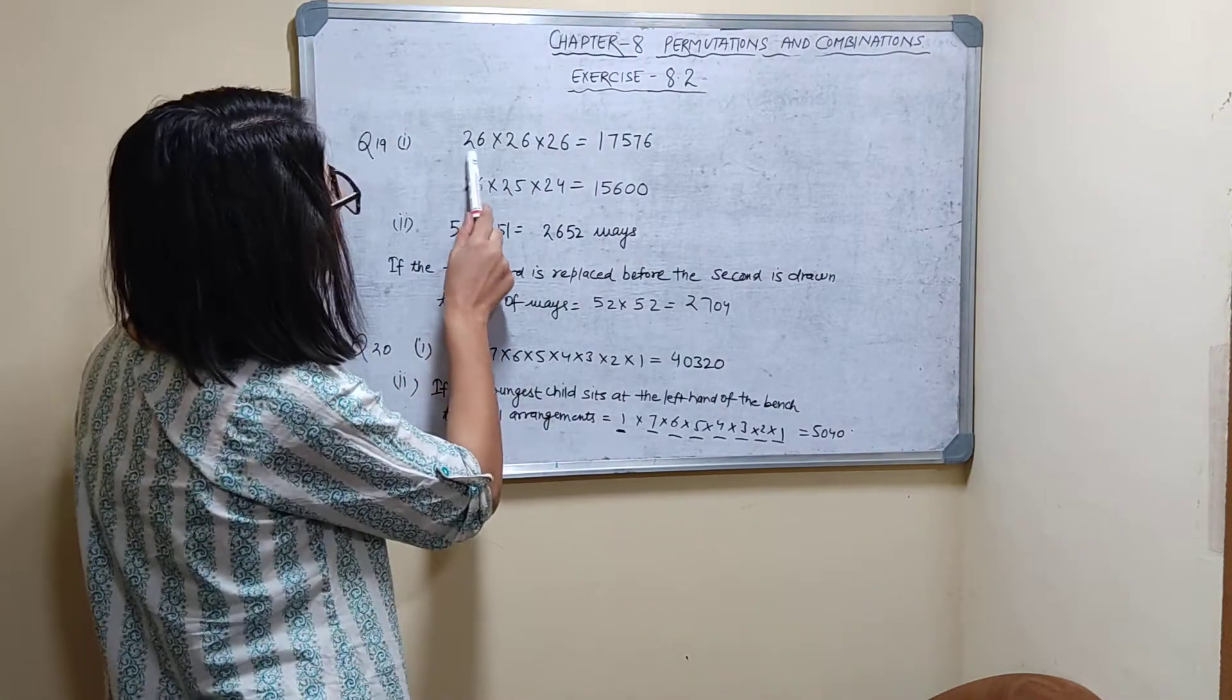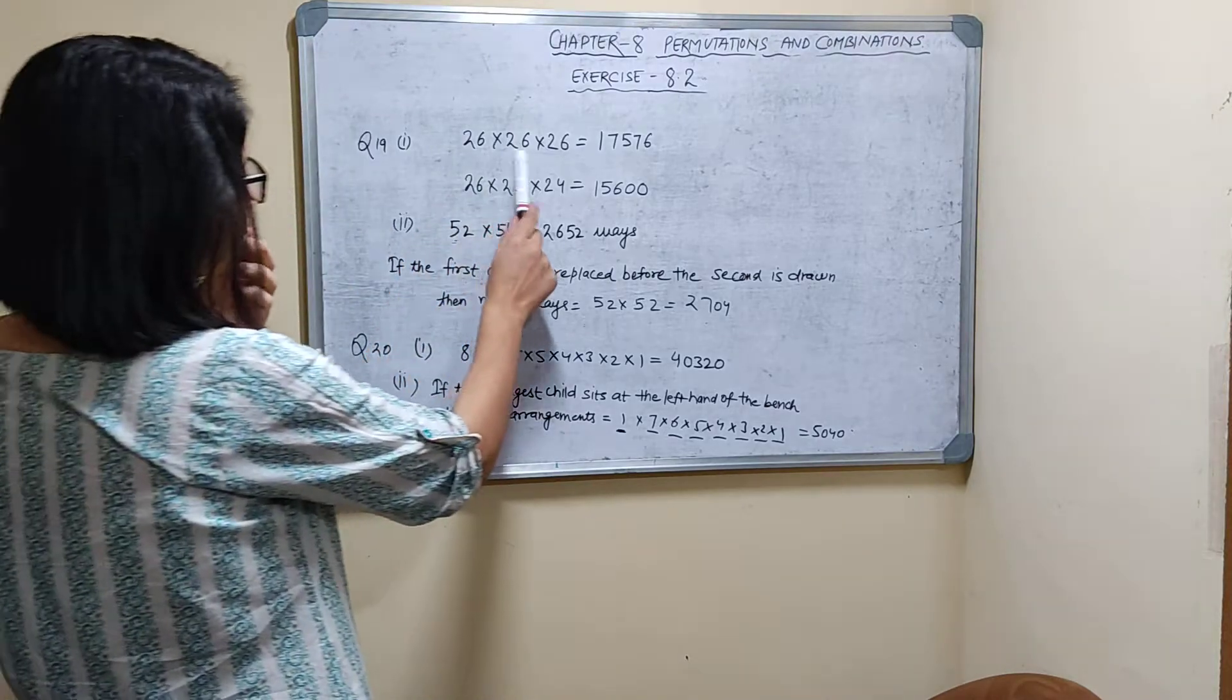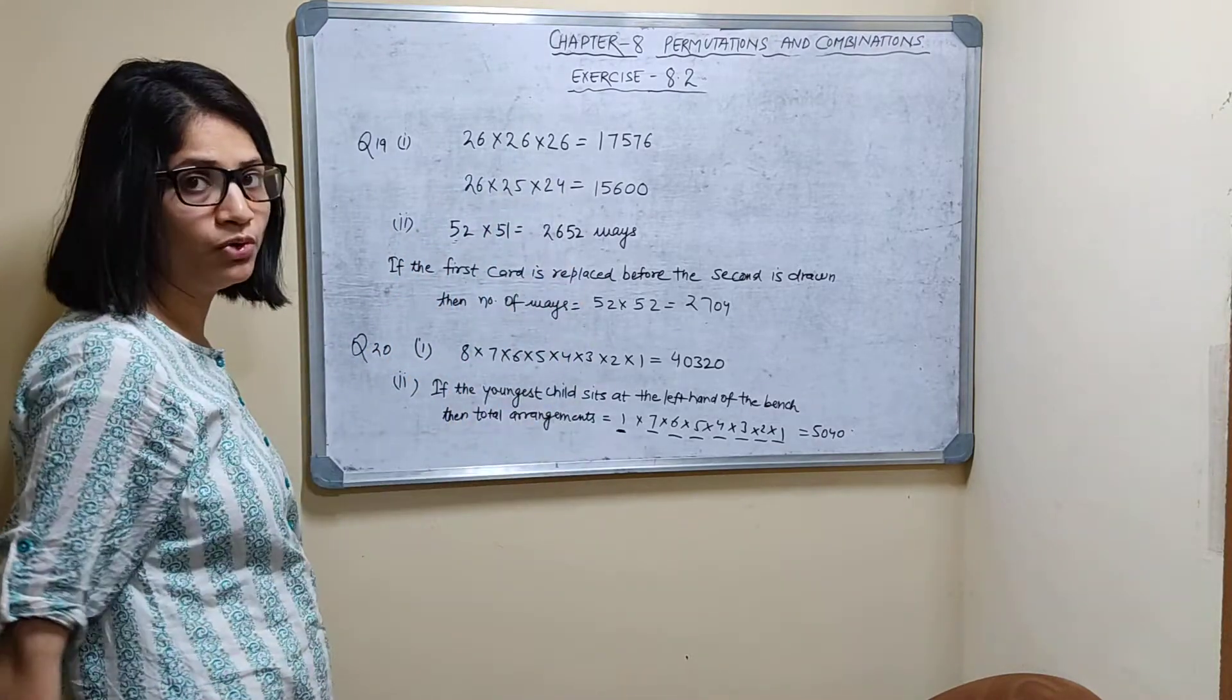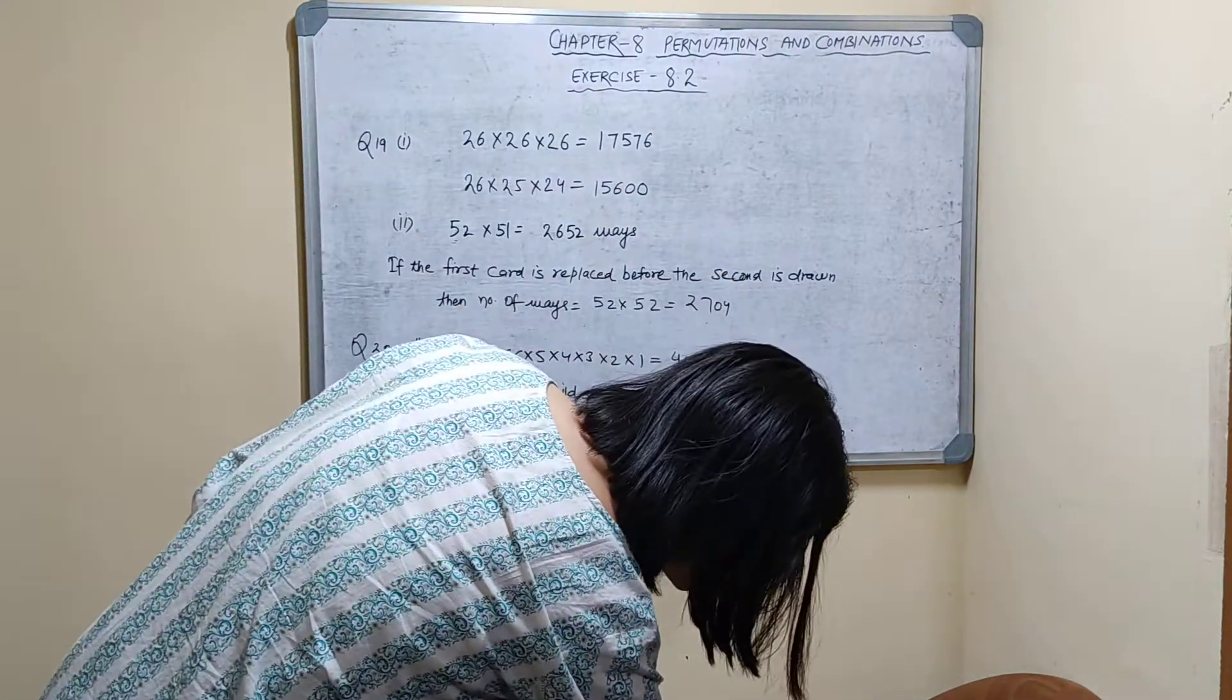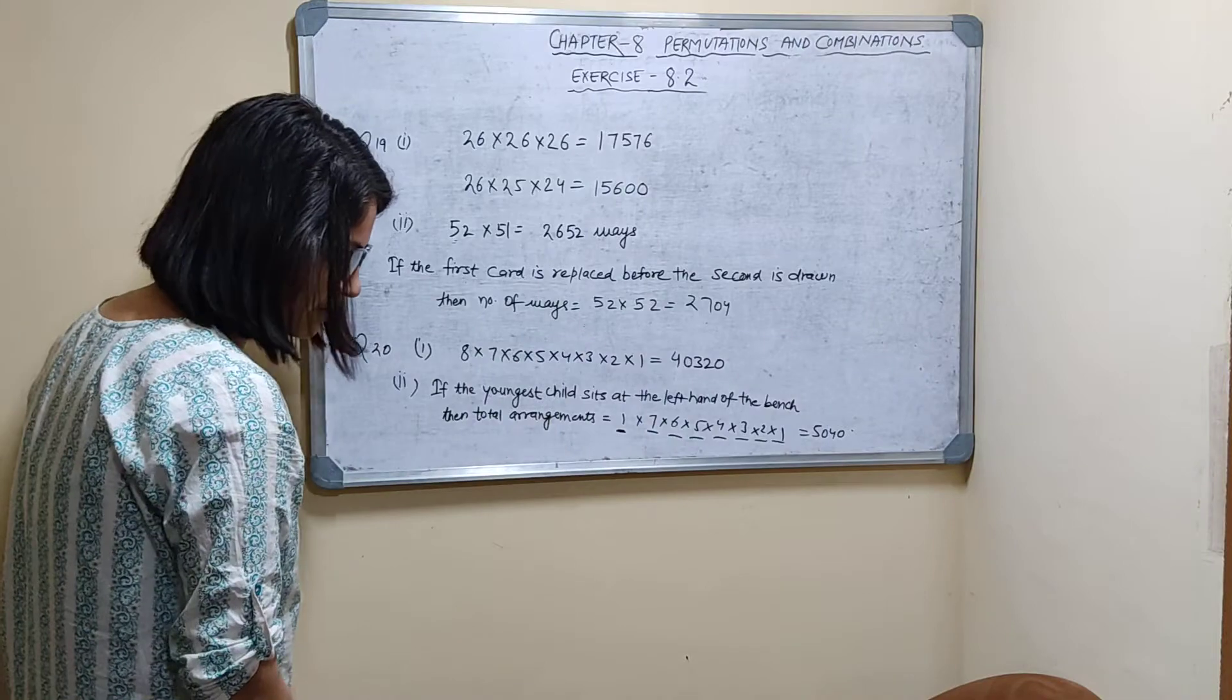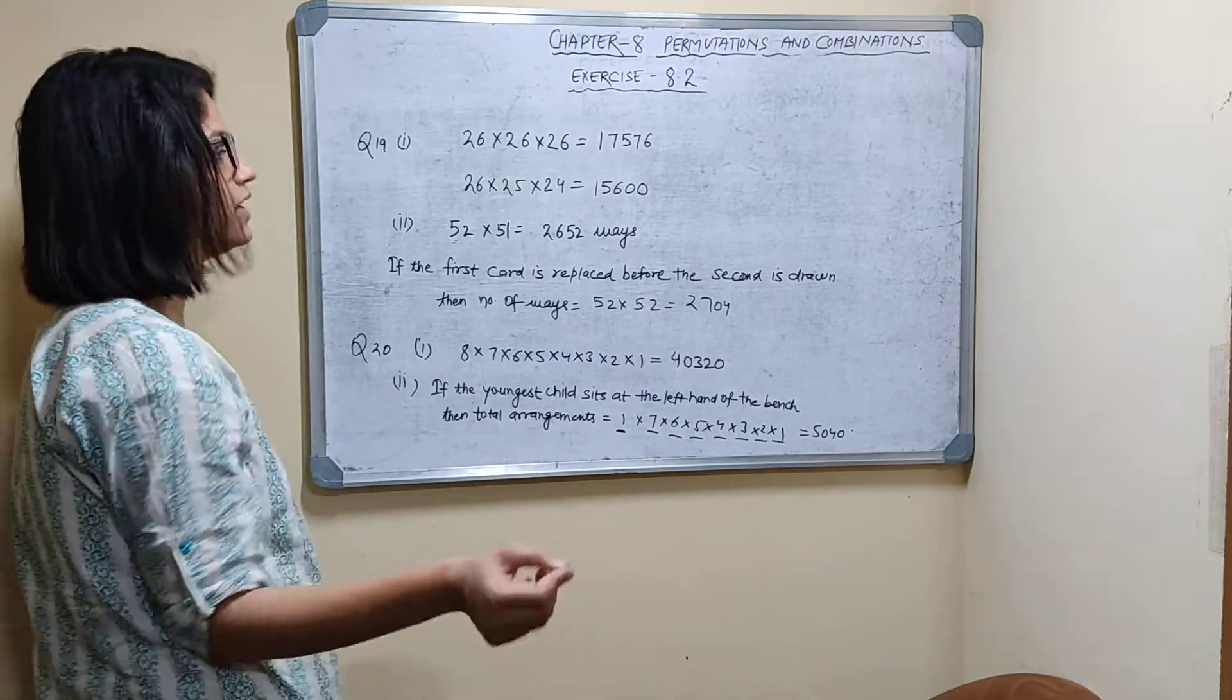So how many alphabets are there? 26. So by multiplication principle of counting, 26 into 26 into 26, that is 17,576 words of three English alphabets can be formed. Second is how many of these have all distinct alphabets?